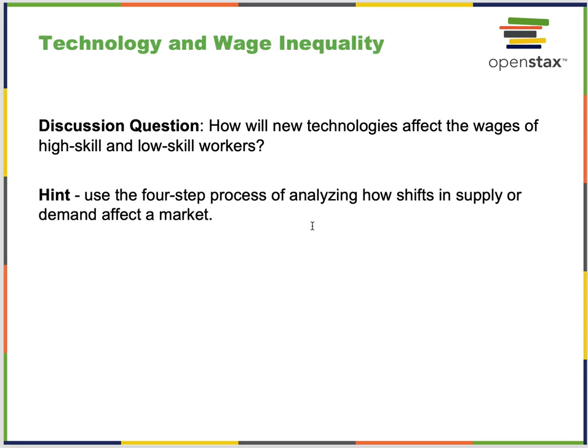A key discussion question: how will new technologies affect the wages of high and low skilled workers? Use the four-step process — draw demand curve D0 and supply curve S0, then draw the new demand or supply curve labeled D1 or S1, analyze how the shift happens, and compare equilibrium E0 to the final equilibrium to see the result.